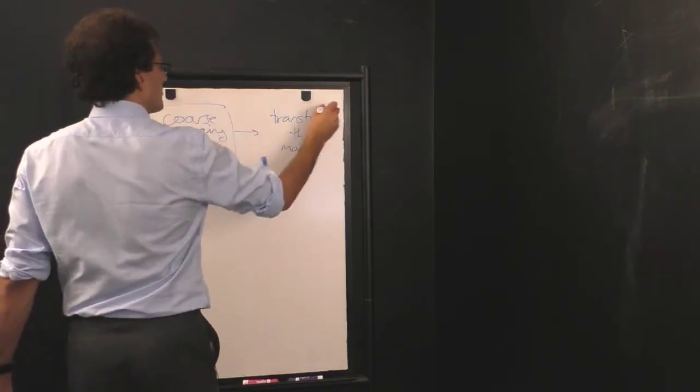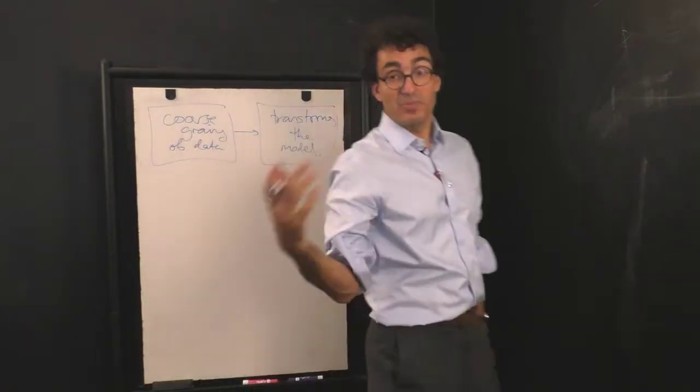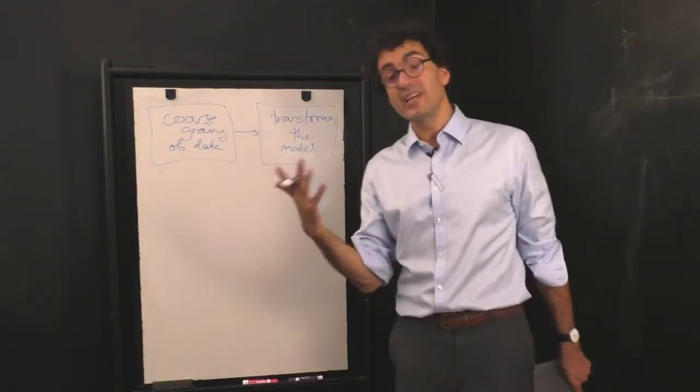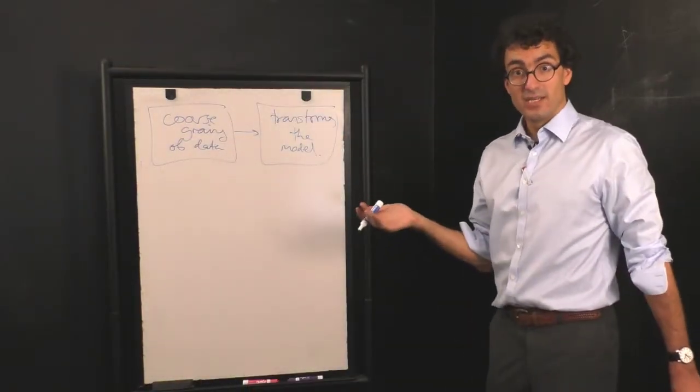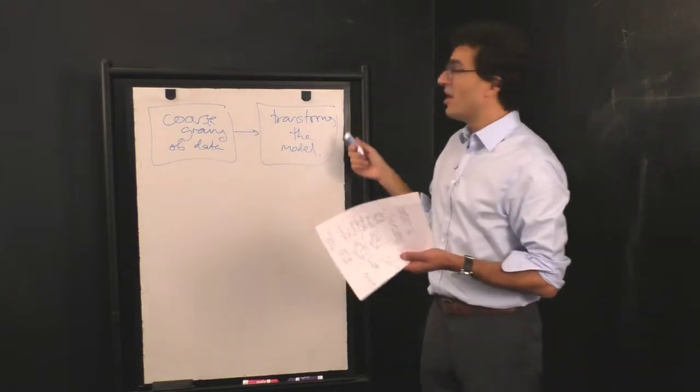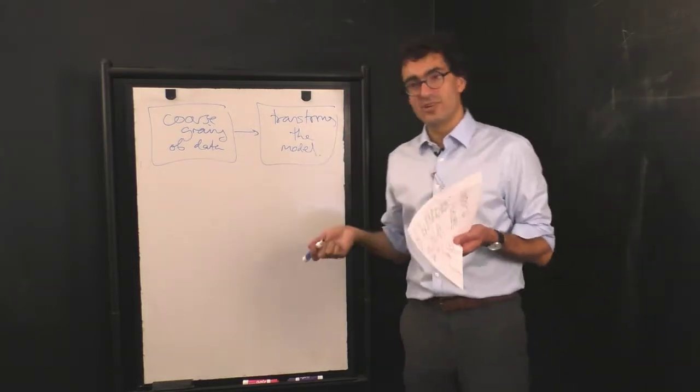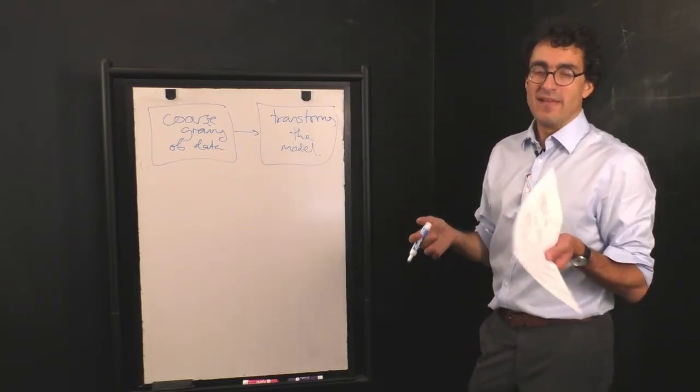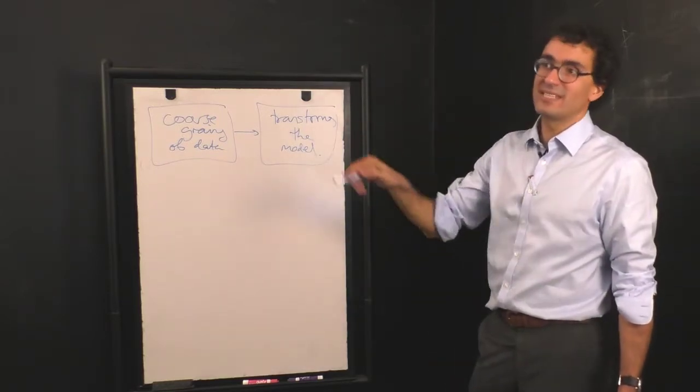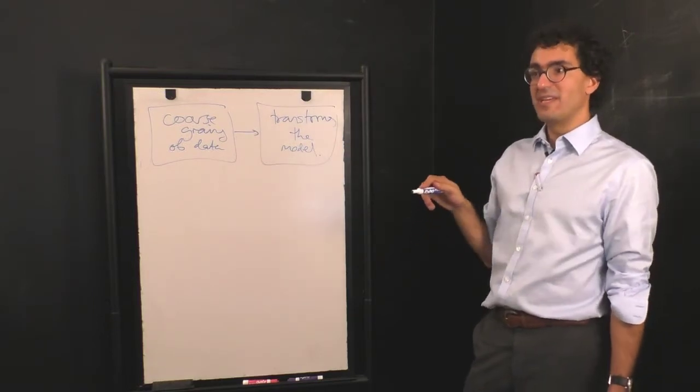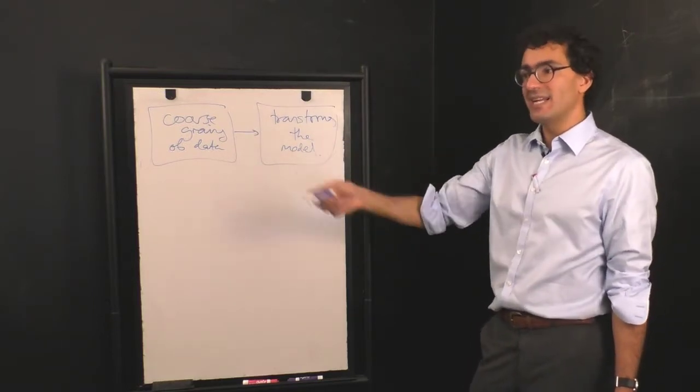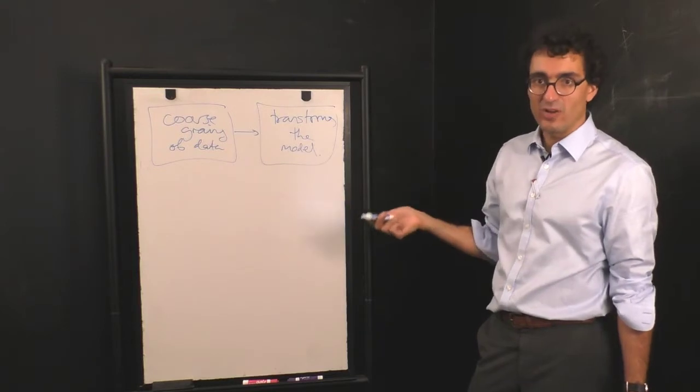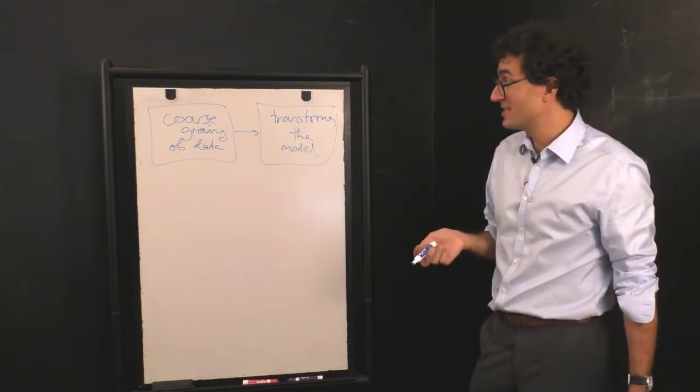In fact we saw a couple things. One is that when you simplify the data, when you coarse grain, you don't necessarily get a simpler model. Sometimes the relationship between the model and the transformed model, once you do the coarse graining, can be somewhat hard to see. If you remember when we took that three-state Markov chain that we began with, when we coarse grained the data and asked what the best fit model would be, it actually had more non-zero transitions, for example.